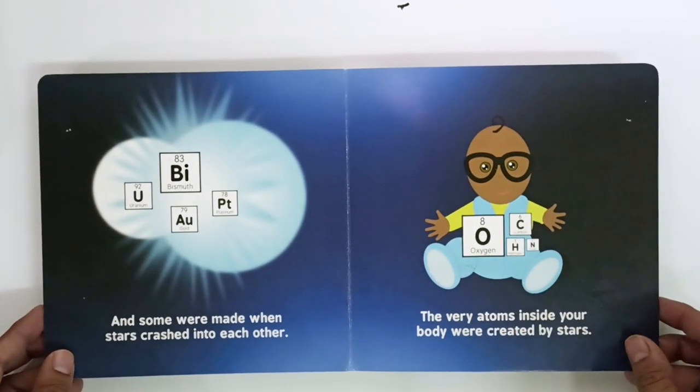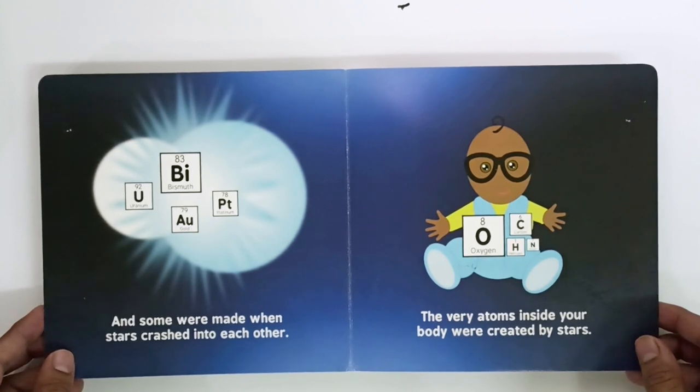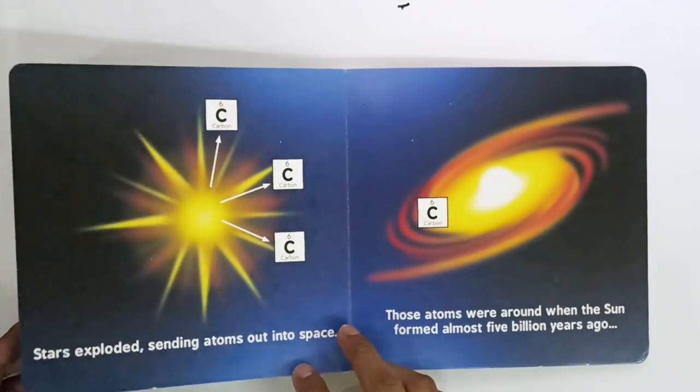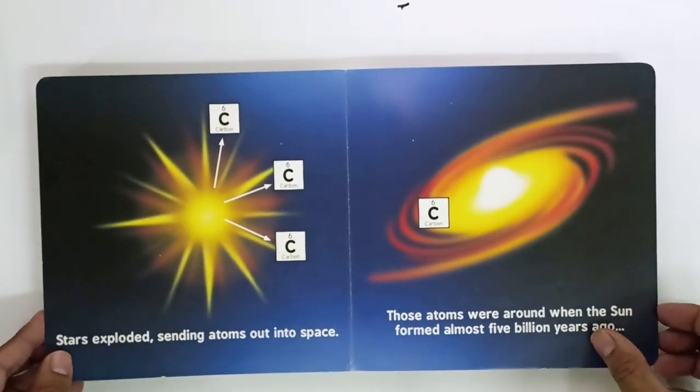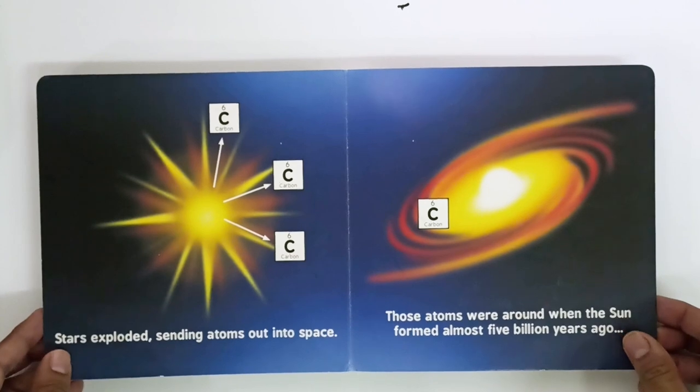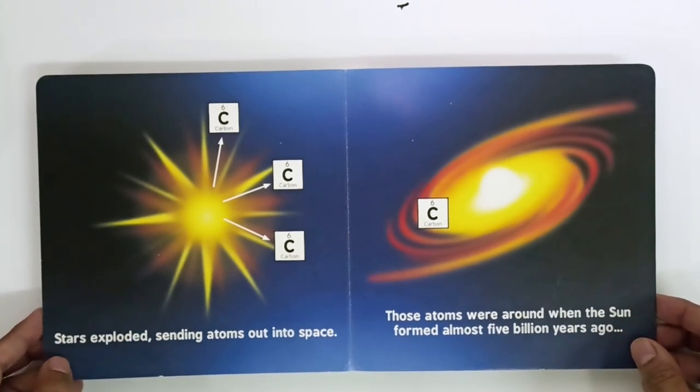Some were made when stars crashed into each other. The very atoms inside your body were created by stars. Stars exploded, sending atoms out into space. Those atoms were around when the Sun formed almost 5 billion years ago.